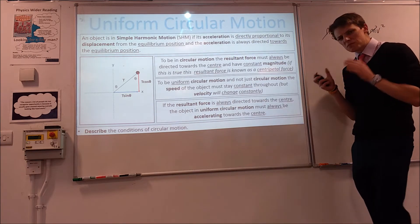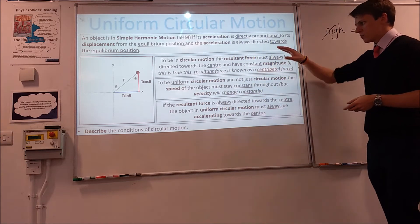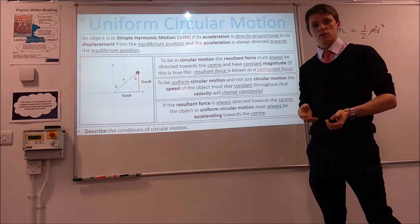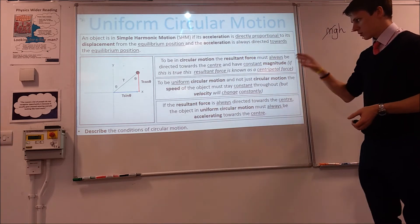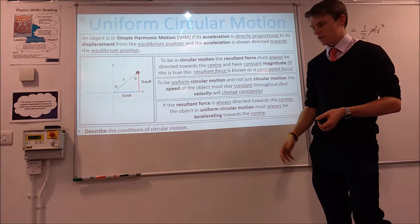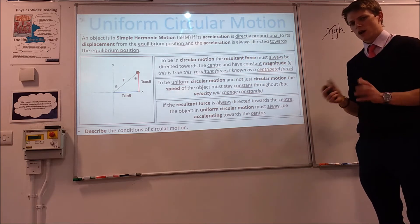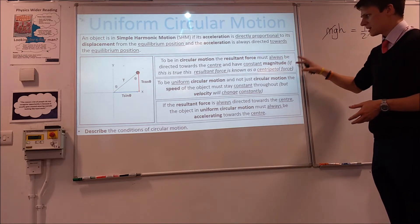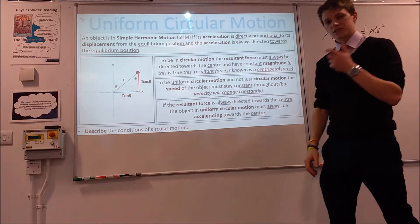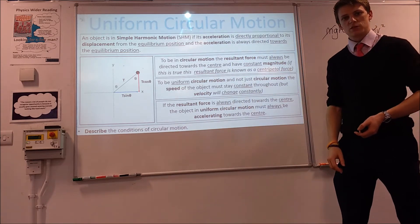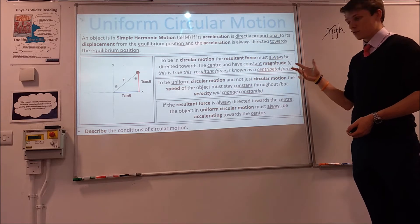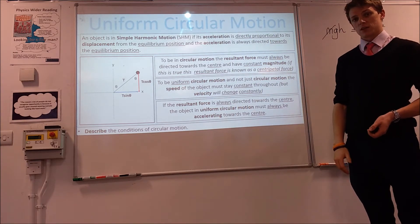So what do we mean by uniform circular motion? To be in circular motion, the resultant force must always be directed towards the centre — that's one of the conditions — and it needs to have fixed magnitude. If you have a condition where the resultant force is directed towards the centre of a circle, that's known as a centripetal force. We haven't invented some new kind of force here; this is just another name for a resultant force that happens to be directed towards the centre of a circle.